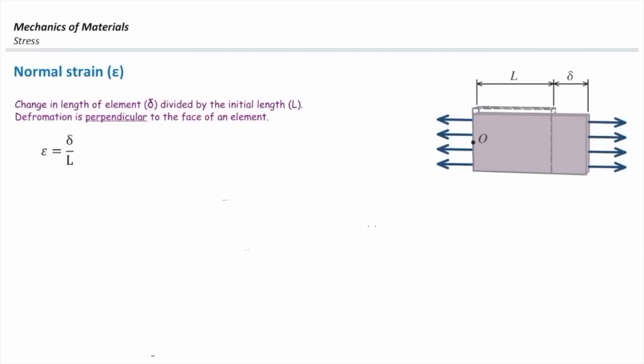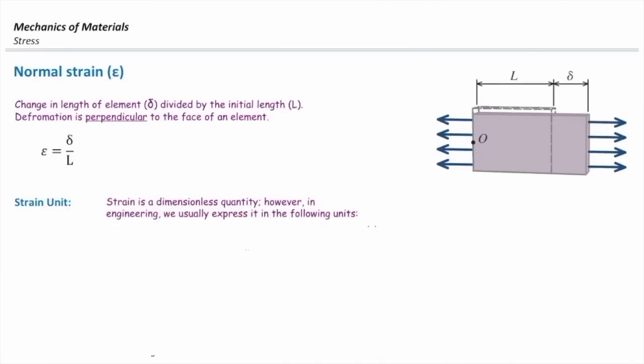Normal strain is defined as the ratio between the change in the length — which we call delta — divided by the initial length of the element, which we call L. So normal strain, which we use epsilon for, is delta over L. The unit of strain is straightforward: strain doesn't have any unit, so it doesn't matter if you are working in US customary units or SI units. It's unitless, but in engineering we usually write inch per inch, or millimeter per millimeter, or meter per meter — they cancel each other.